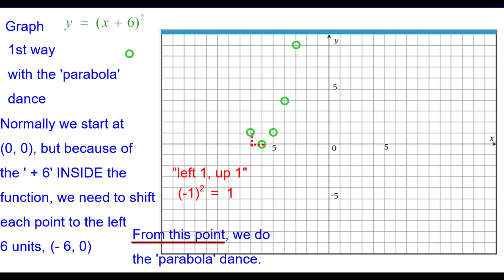And on the other side, left 1 up 1 because negative 1 the quantity squared is 1. Left 2 up 4, left 3 up 9.